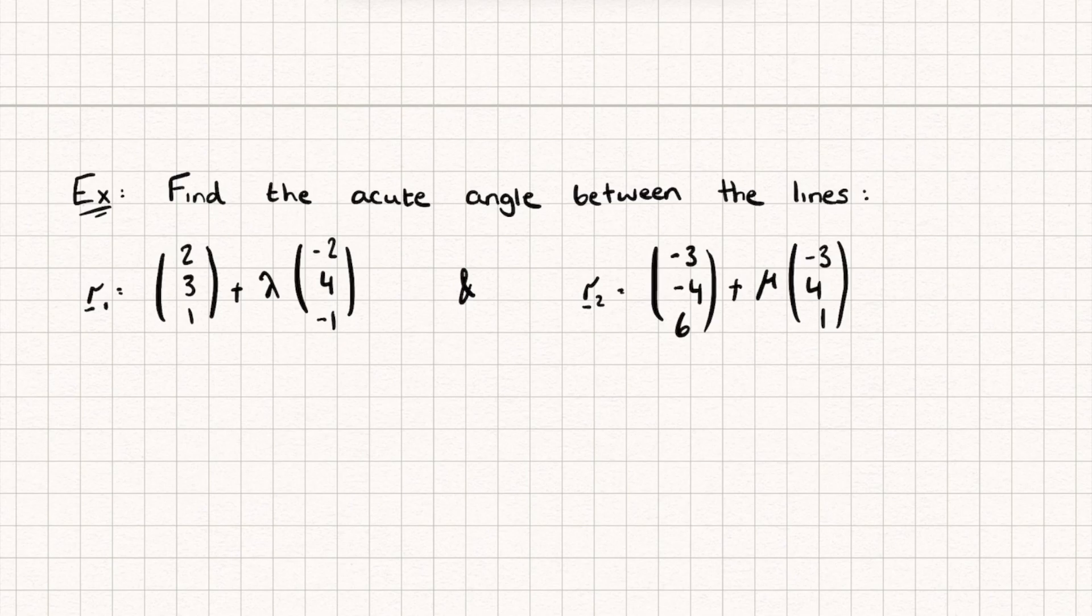So after seeing that, hopefully we're now happy that we're only really interested in the direction vector of these two lines. So for my line R1, I'm only really interested in this vector here. And for my line R2, I'm only interested in this vector here. So what we're going to do first is take the dot product or the scalar product of these two vectors.